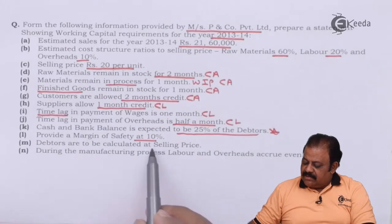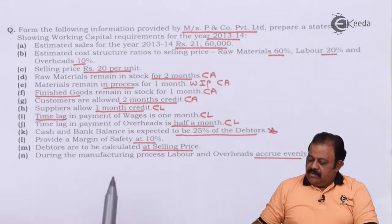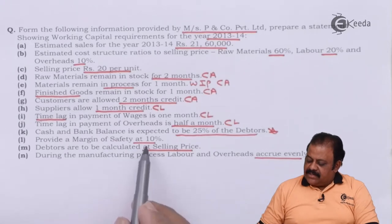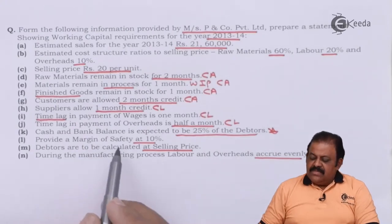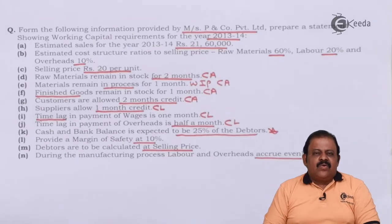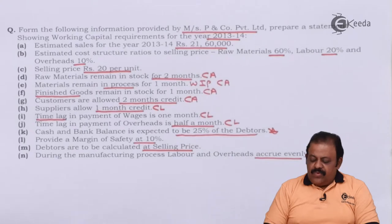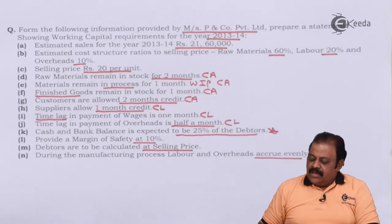Debtors are to be calculated at selling price. During the manufacturing process, labour and overheads accrue evenly. Margin of safety is 10%, which means we will calculate net working capital and then add 10% margin of safety to arrive at the final net working capital to be arranged. This safety margin accounts for the possibility that we may estimate lesser working capital; actual situations may differ from estimates, so providing an extra 10% ensures there is no shortfall.